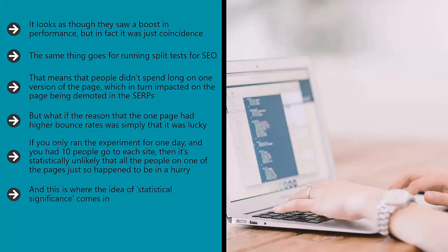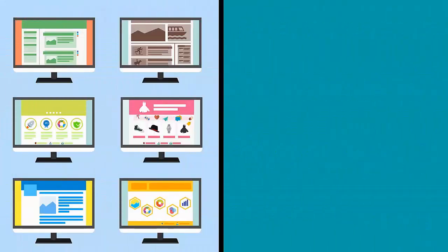And this is where the idea of statistical significance comes in. In order to rule out freak coincidence and chance, you need a large enough sample size. You can never say with 100% certainty that the results of your test are accurate, but you can run the test long enough and get enough subjects to say that it is accurate beyond reasonable doubt. You might flip a coin and get heads 10 times in a row — that's an extremely unlikely outcome, but it's possible. But if you flip a coin and get heads 100 times in a row, that is so astronomically unlikely to be coincidence that you can probably assume the coin is rigged. The same goes for your split test: run the test long enough and the results become increasingly likely to be accurate. This is what we refer to as statistical significance.